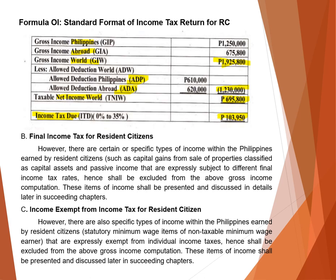For final income tax of a resident citizen, this covers passive income and capital assets, which have given rates in the module. Income exempt from tax for resident citizens commonly includes income earned as a statutory minimum wage earner under the TRAIN law. This will be explained further later.